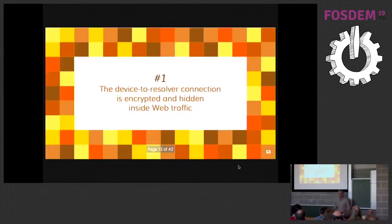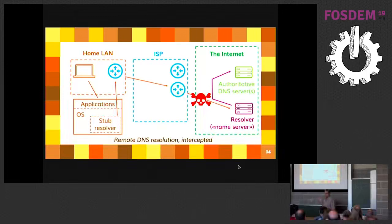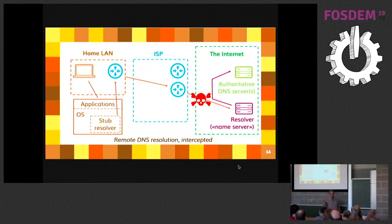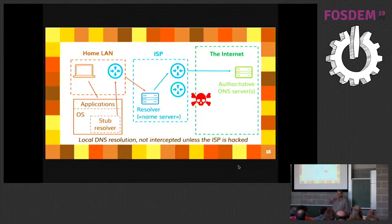So let's go through these three changes and see whether they are good or bad. The first one is encrypting the connection and hiding it into web traffic. The scenario it's trying to address is someone trying to spy on you somewhere over the internet on the path to your remote resolver. Today DNS is not encrypted, so they can see all your queries — they can track you and list everything you access over the internet because everything starts with DNS resolution. This is really a privacy and security problem.